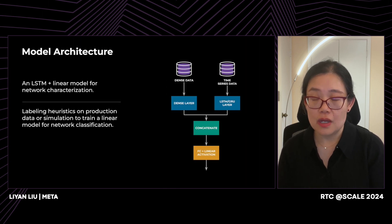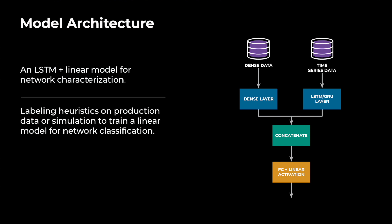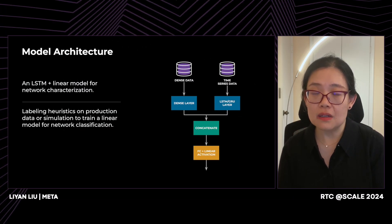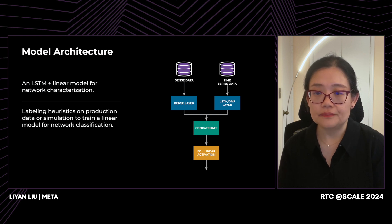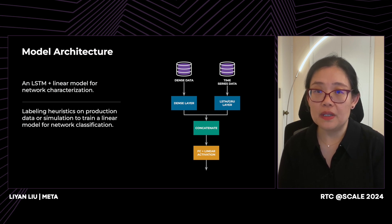For the model architecture, since we are training on both time-series and non-time-series data, we build a model architecture that can take input for both. For the time-series data, we pass it through an LSTM layer — a long short-term memory layer — that converts the time-series input into a vector representation. For the non-time-series data, we pass it directly through a fully connected layer. The two vectors are then concatenated to fully represent past network conditions, passed through another fully connected layer, and the final output is the predicted value of the target variable.